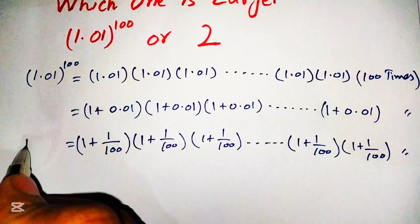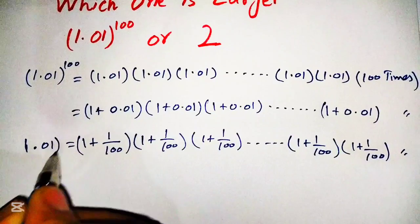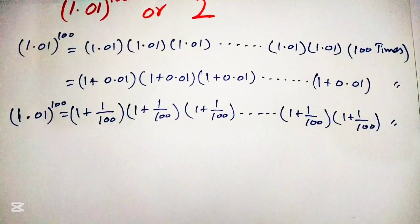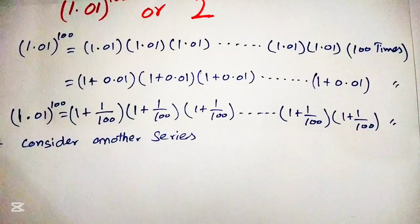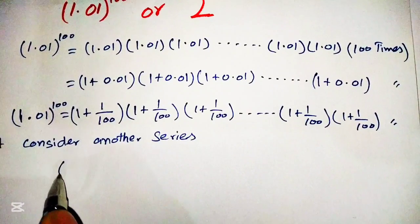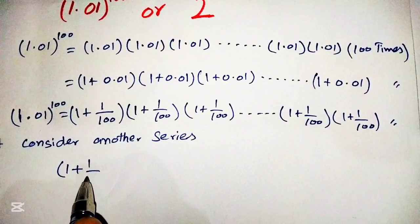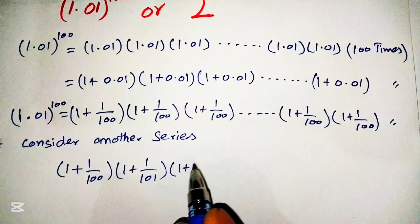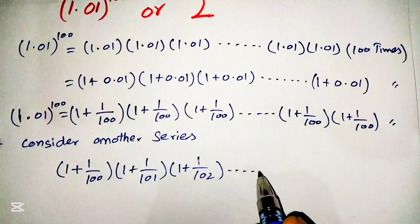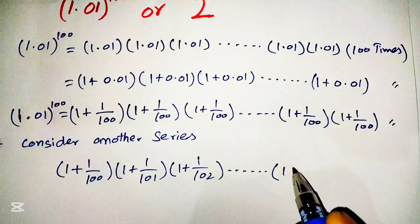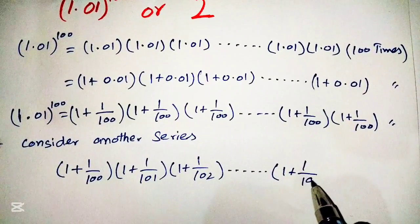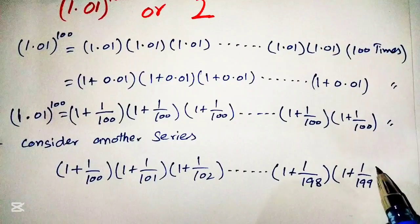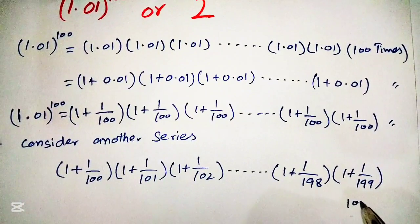Now we will write another series to compare with this. We consider the series: (1 + 1/100) × (1 + 1/101) × (1 + 1/101) × ... × (1 + 1/100), also taken 100 times.